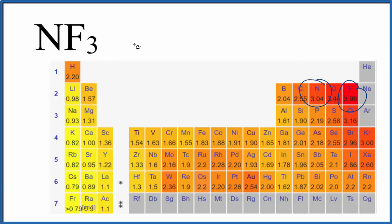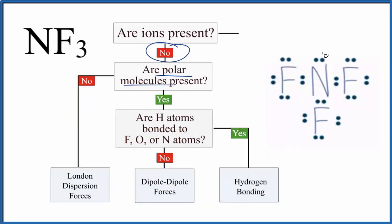That's also because if we look at the Lewis structure, we can see that we have this lone pair. So that's going to push these three fluorine atoms down, give us a trigonal pyramidal molecular geometry. So it's not a symmetrical molecule either. So we expect we'd have a polar molecule. So yes.